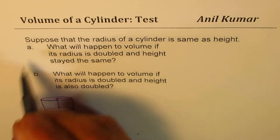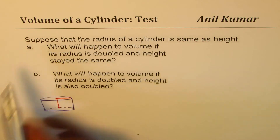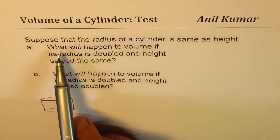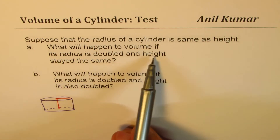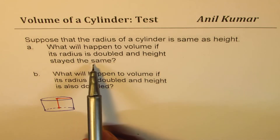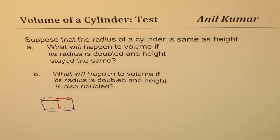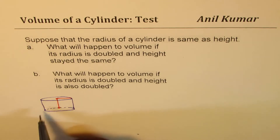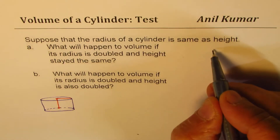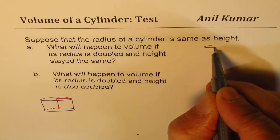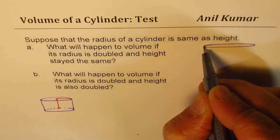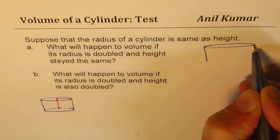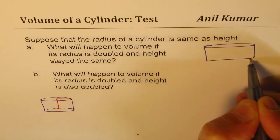Based on this, we have two questions. Part A: what will happen to volume if the radius is doubled and the height stays the same? So if that is my cylinder, what I'm going to do here is I'm increasing the radius to double, kind of like this, and height remains same.